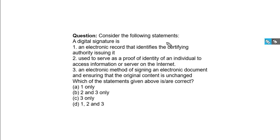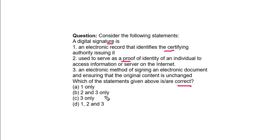Consider the following statements about a digital signature. Statement 1: An electronic record that identifies the certifying authority issuing it, used to serve as proof of identity of an individual to access information or server on the internet. Statement 2: An electronic method of signing an electronic document and ensuring that the original content is unchanged. Which of the statements given above are correct? Options: 1 only, 2 and 3 only, 3 only, 1 and 2 only. Your answer is all are correct — 1 and 2.